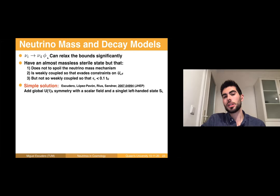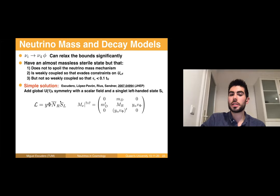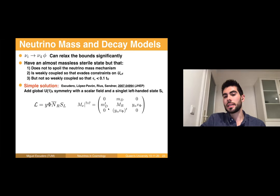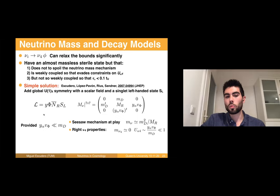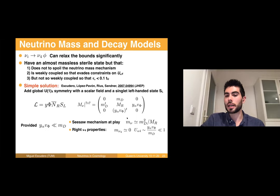My Valencian collaborators Jacobo Lopez-Pavon, Luria Rius, Stepan Salder, and I found a simple solution: add a U(1) symmetry with a scalar field charged under this new global U(1) symmetry, plus a single left-handed state S_L. The phi will be the Goldstone boson associated with this symmetry. Given the additional particle content together with the standard three sterile neutrinos, we can write an extra term in the Lagrangian, resulting in a 7×7 mass matrix — the standard 6×6 seesaw matrix plus additional terms.